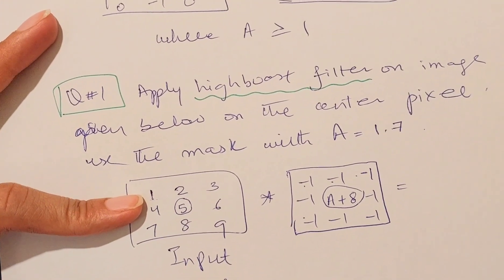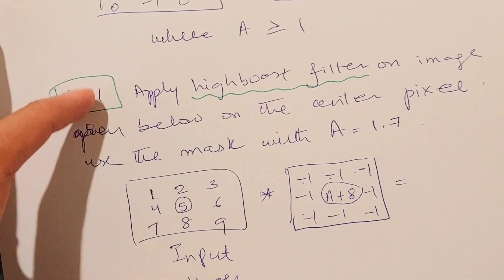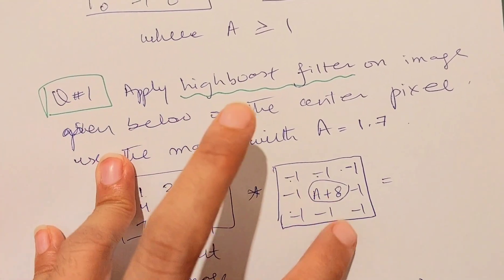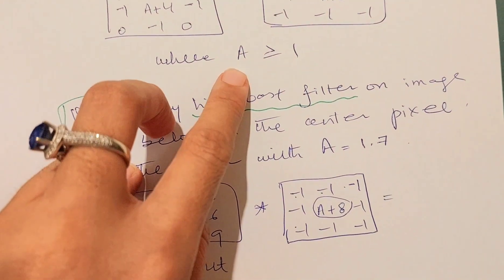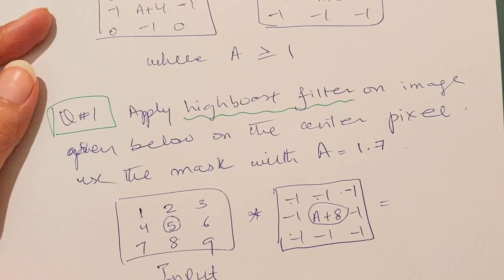This is your input image and we have to apply the high boost filter by using this mask. This is the high boost mask that is given to us, and the value of A is given as 1.7. We can see that the value of A is larger than one.